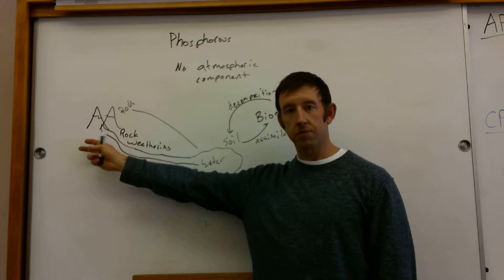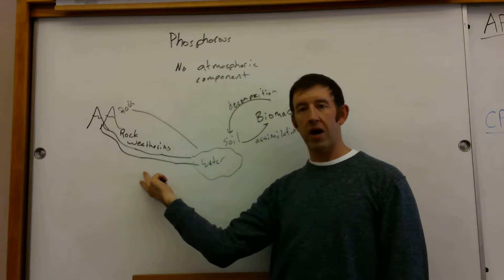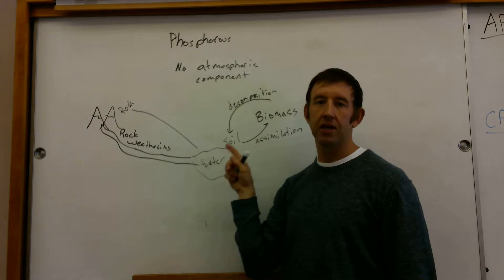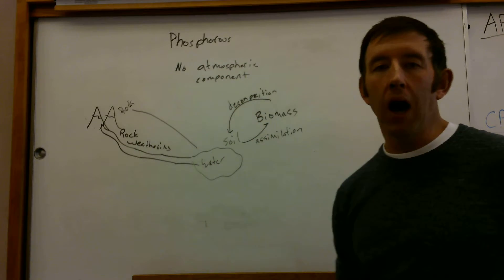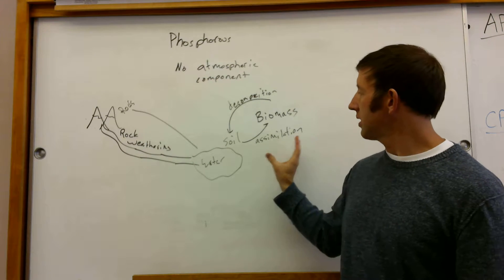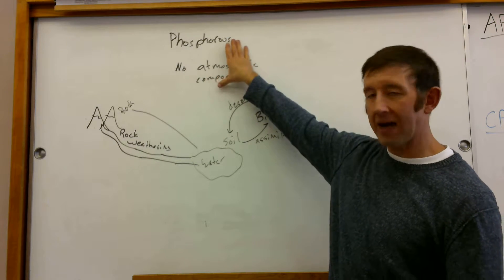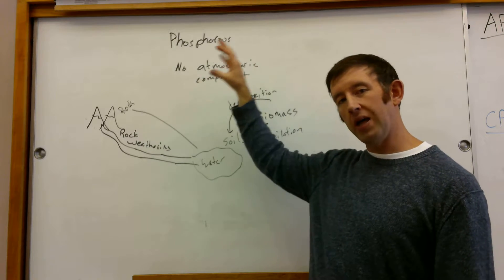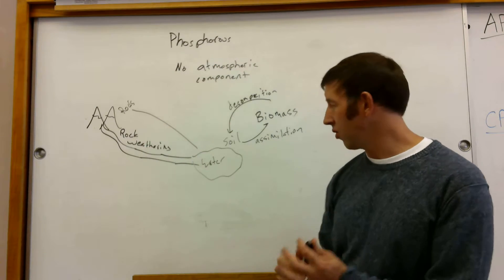Starting in the rocks, that gets eroded through normal weathering processes. It works its way into water, eventually into soil, into biomass, and there's a cycle. Now because we're not returning phosphorus back to the atmosphere, it's really difficult for it to go through an external cycle. It's really slow.